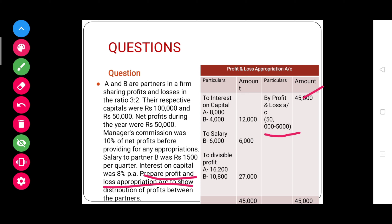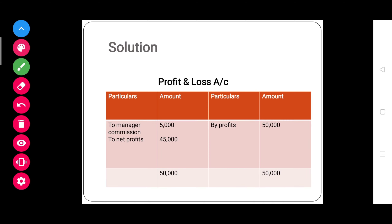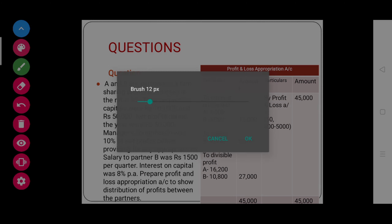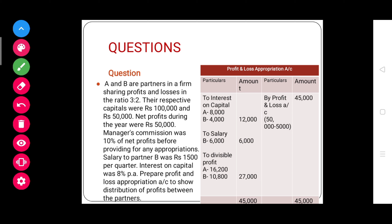As a shortcut, we will simply deduct manager commission from the profits, giving forty-five thousand. So the two ways are: either prepare the profit and loss account first to find forty-five thousand, or simply deduct from the net profit on the credit side of the profit and loss appropriation account. Ultimately it comes out to forty-five thousand, recorded on the credit side of the profit and loss appropriation account.